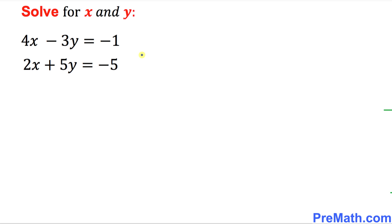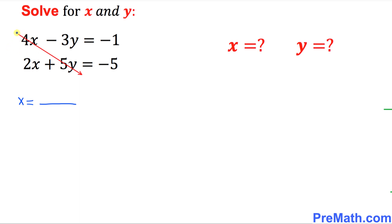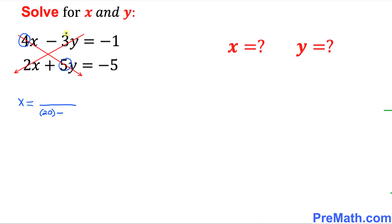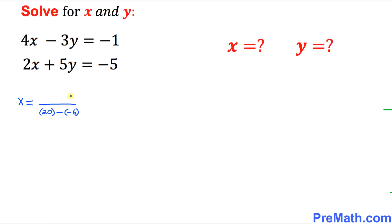Here is our next example and we want to solve for x and y again. Let's start with x. We'll put x equal to a fraction and start from the denominator part. Multiplying from left to right as shown: 4 times 5 is 20, put it in parentheses, then minus, and going from right to left: negative 3 times positive 2 gives negative 6, in parentheses. Now let's focus on the numerator part.